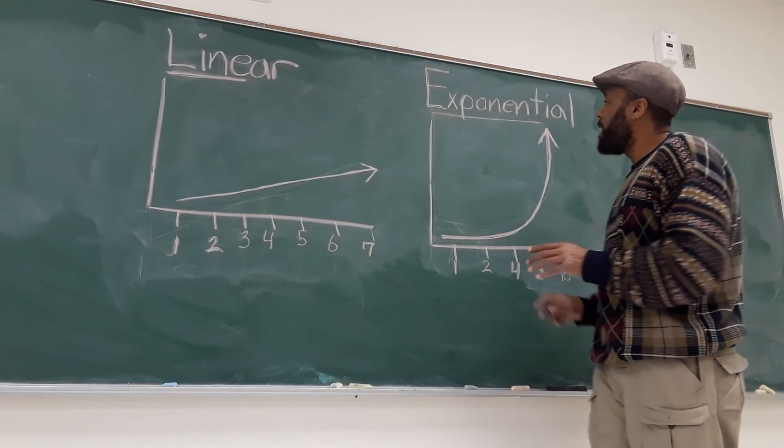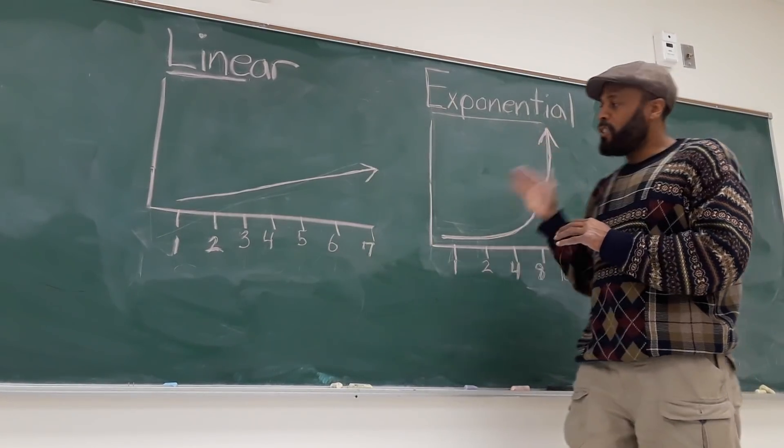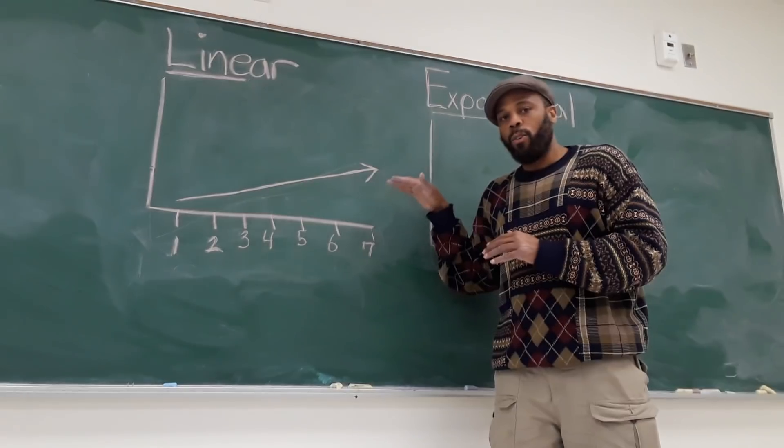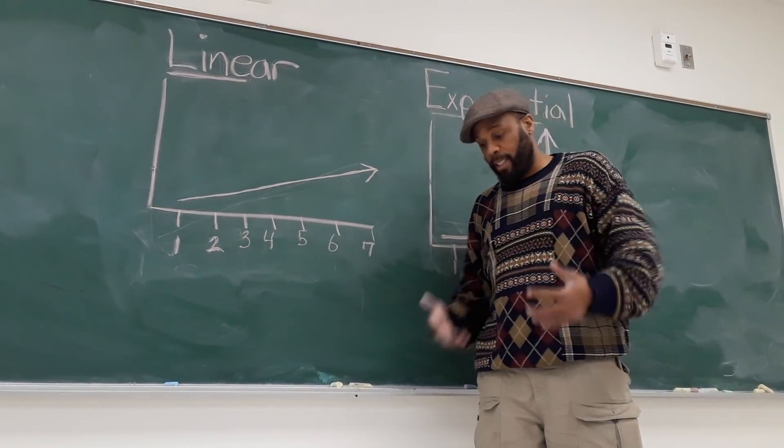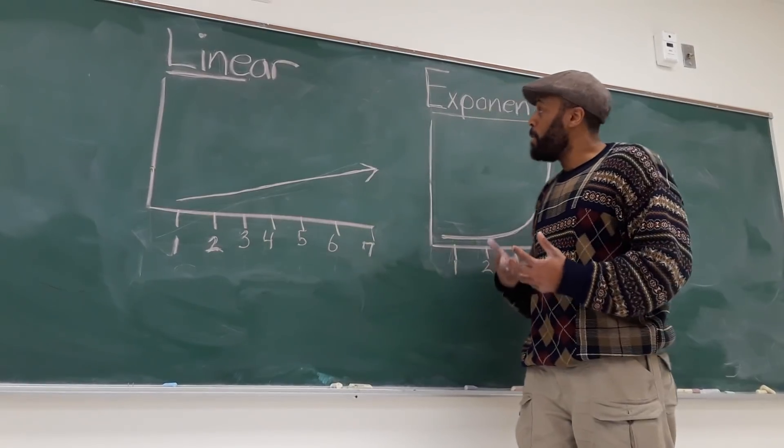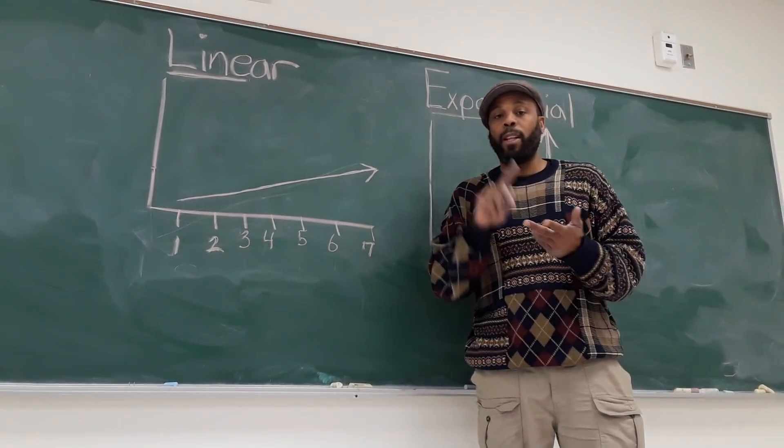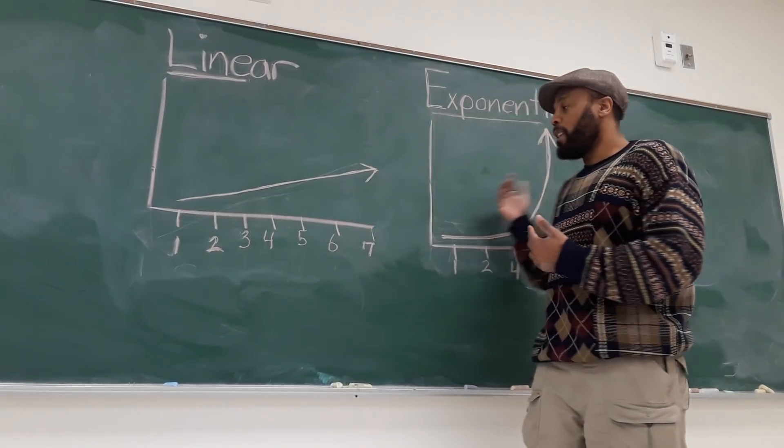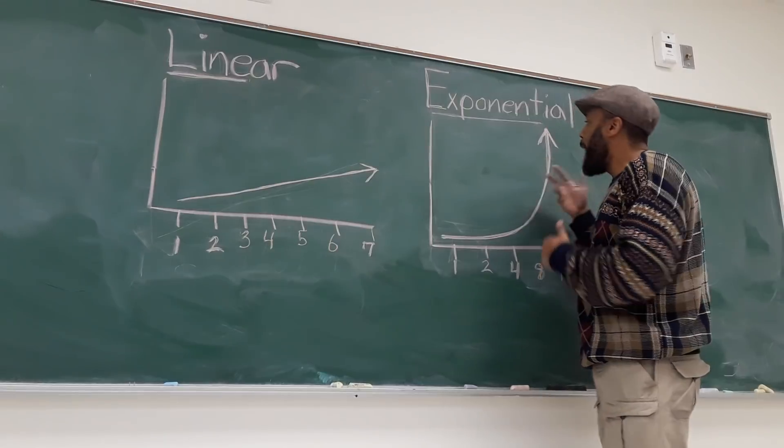One thing to understand is when you look at nature, nature grows exponentially. Nature doesn't grow in a linear way. You look at human beings, our cells constantly multiply for us to actually be what we ultimately become. And that is an exponential growth model. If you look at animals, if you look at plant life, it grows exponentially. It does not grow incrementally in a straight line. That is what happens in nature.